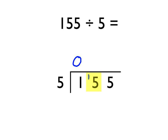Then we say to ourselves: how many times does the 5 go into this 15? Well, 5 goes into 15 three times, so we put a 3 up here. Then we move along to the next number — how many times does 5 go into this 5? Well, just once. So we put the 1 up there, and the answer to our question is 31.